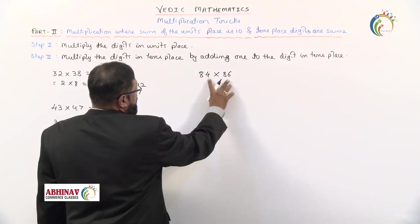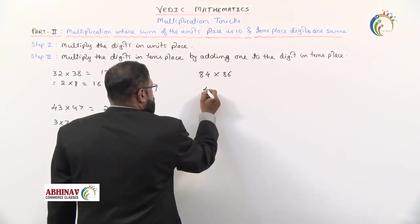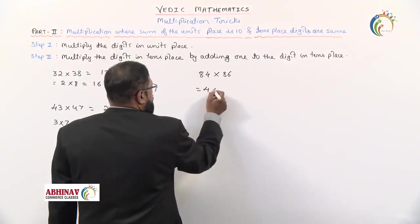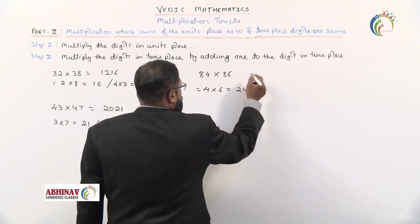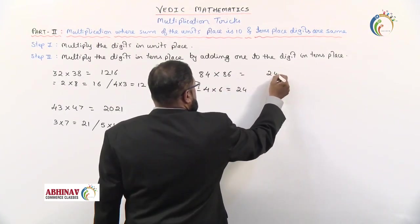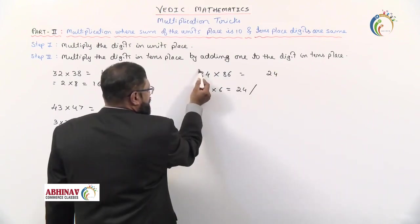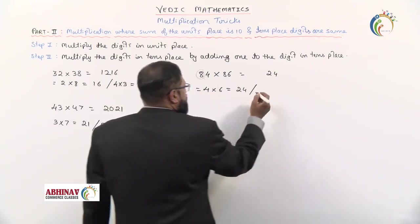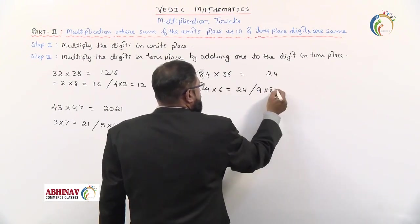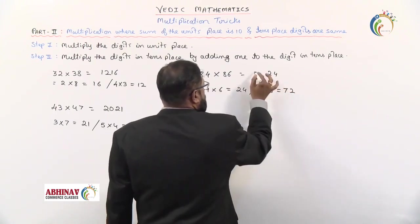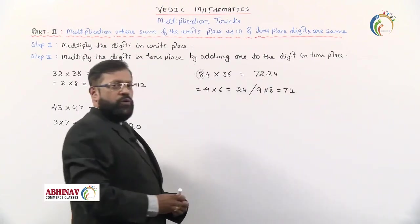Another example: 84 × 86. Units digits 4 and 6 sum to 10, and the tens digits are both 8. Step 1: 4 × 6 = 24. Write 24 on the right. Step 2: increase 8 by 1 to get 9. Then 9 × 8 = 72. Write 72 on the left. So 84 × 86 = 7224.